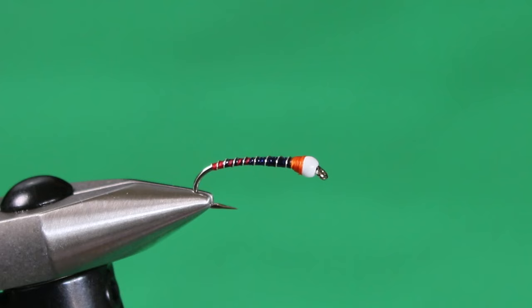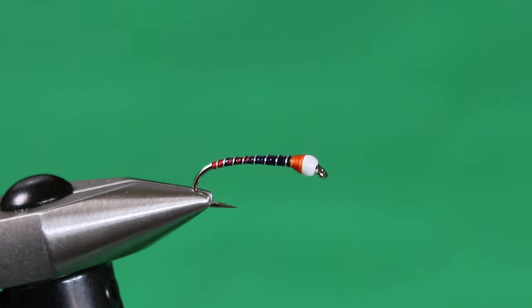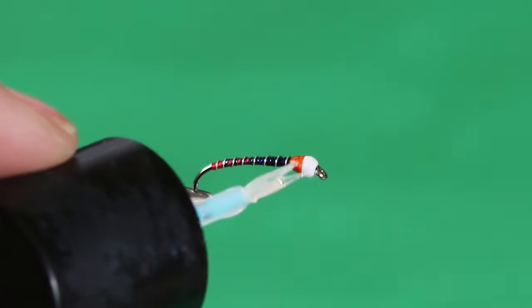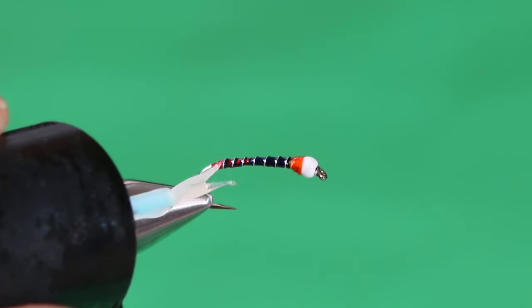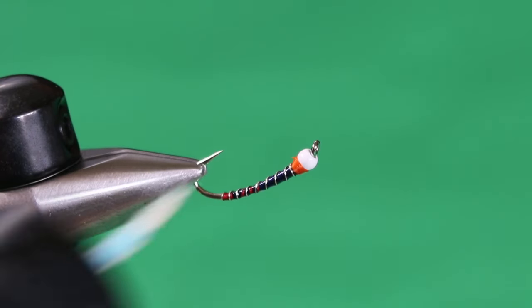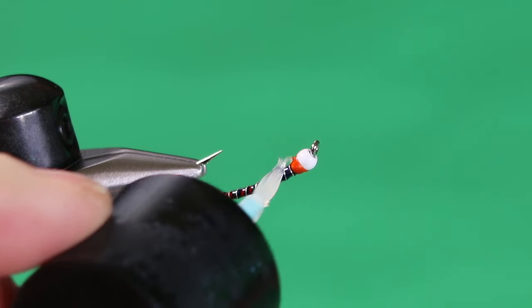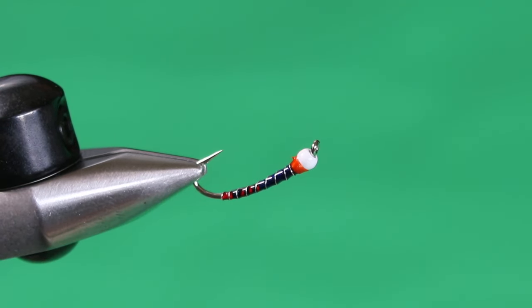You can sort of see already that some of that red is bleeding through, and it'll get magnified when we coat the fly, which is what we're going to do next. I'm going to use some of the Solarez bone dry, and just coat. You can coat the bead a little bit to put a little more protective coat on there for any accidental chipping that might happen.